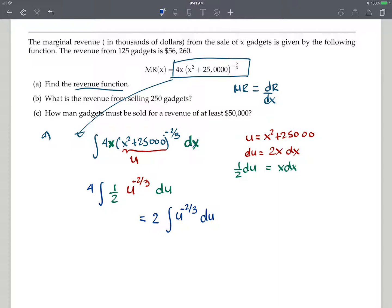That would be, of course, two times u to the negative 2/3 plus one, which becomes a positive 1/3. Then divided by a third, which is the same as multiplied by three. All right, so I'm going to put a three back here. Then we divide by a third in the next step. And then we need to add a constant.